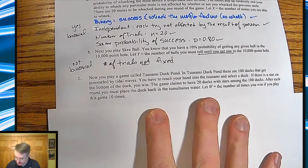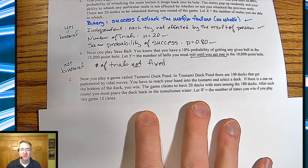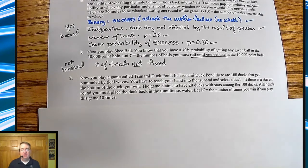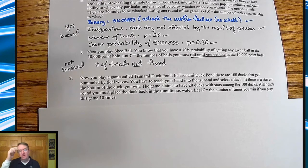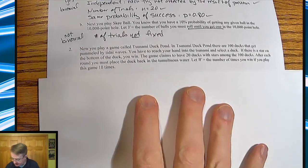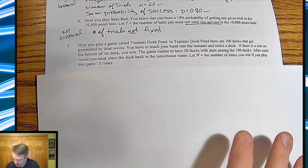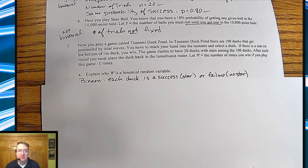All right, so now you're playing a game called Tsunami Duck Pond. In the Tsunami Duck Pond, there are 100 ducks that get pummeled by tidal waves. You reach in, pull out a duck. If it has a star, you win. If it doesn't have a star, you lose. The company says there's 20 ducks in there that have stars on the bottom out of the 100. After you're done, you have to put it back into the water as it's all getting mixed up, and then away you go again. And you're going to play the game 10 times. W is going to be the number of wins that you get. So explain why W is a binomial random variable.